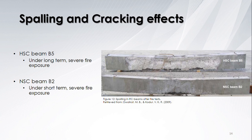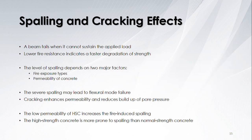Spalling and cracking effects: Here is a picture of two beams subjected to fire. The one on the top is a high-strength concrete beam exposed to long-term severe fire with severe level spalling, whereas the normal-strength concrete beam under short-term severe fire shows some cracks on the bottom but significantly less spalling. In this test, a beam fails when it cannot sustain the applied load. Lower fire resistance indicates faster degradation of strength. When the same loads are applied, the level of spalling depends on two major factors: fire exposure type and permeability of concrete. Spalling may lead to flexural failure. Cracking enhances permeability and reduces build-up of pore pressure. The low permeability of high-strength concrete increases fire-induced spalling, which means high-strength concrete is more prone to spalling than normal-strength concrete.